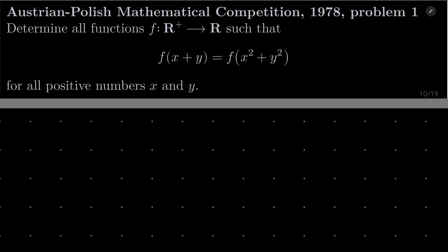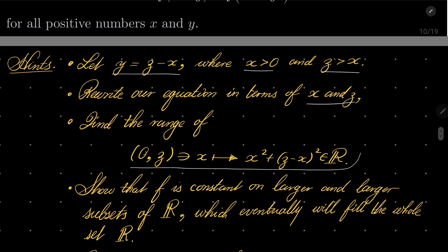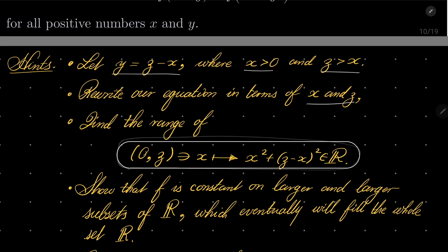Here are my hints. First, let y be equal to z minus x, where x is an arbitrary positive number, and of course y must be positive, so z should be strictly greater than x. Essentially, rewrite our equation in terms of x and z, and find the range of this quadratic function, which takes a real number x from 0 to z, and maps it to x² + (z-x)².